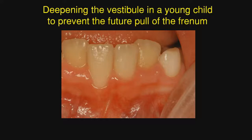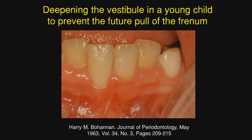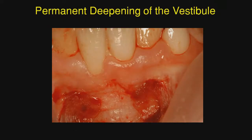Deepening the vestibule in a young child to prevent a future pull of the frenum. In several cases where the orthodontist sent the patient expecting a graft, I would suggest deepening the vestibule using Harry Bohannon's technique along with Hermann Korn's. Bohannon found that if you did not expose bone at the depth of the periosteal separation, the vestibule would completely reform. We used the Korn technique and you can see where the incision was made.